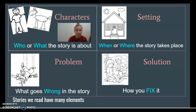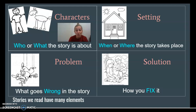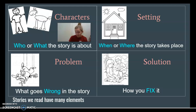The first one is characters. Characters are who or what the story is about. In some of the stories we've already read, like The Invisible Boy, our story element characters were Brian and Justin. We've read lots of stories with lots of different characters, and they are who the story is about.